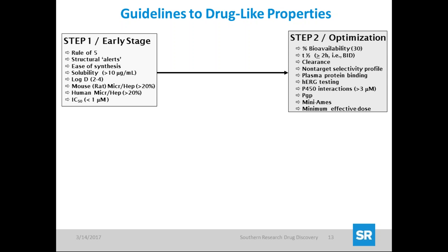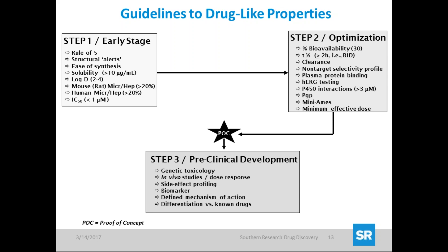Taking all those parameters into account: when you find hits, do some SAR, and head toward a lead, early-stage guidelines include rule of five, structural alerts, ease of synthesis, and solubility. The second stage includes bioavailability, half-life clearance, plasma protein binding, genotox, hERG testing, and P450 interactions. Once in lead development, you profile the compound to get a baseline and know whether changes are improvements. Step two then leads into proof of concept in animal studies — either oral or via IP, sub-Q, or IV dosing.